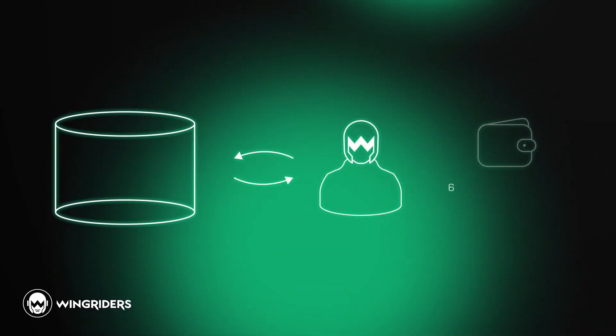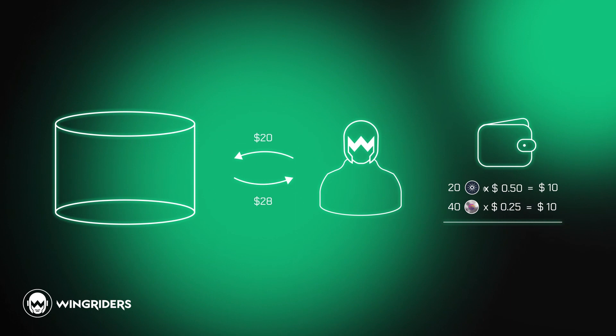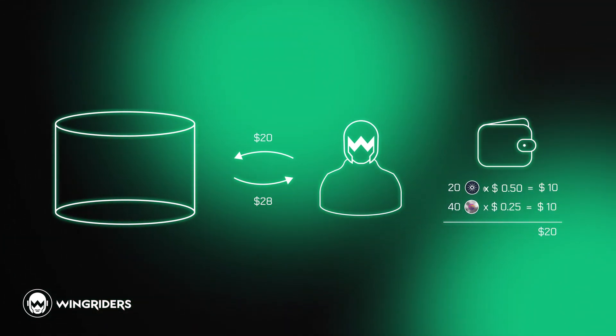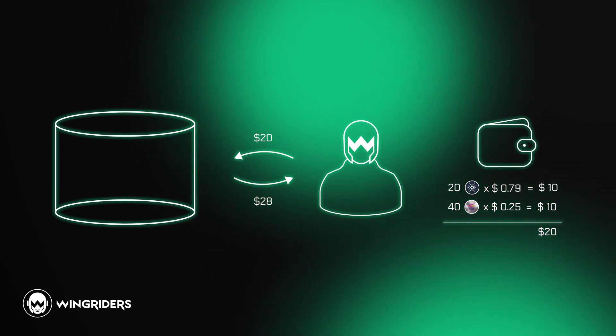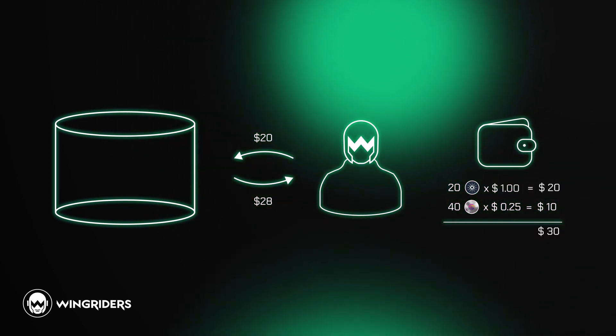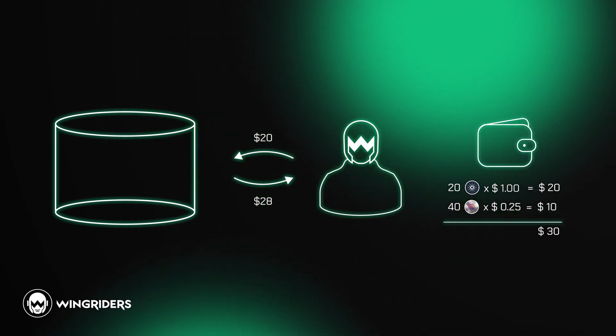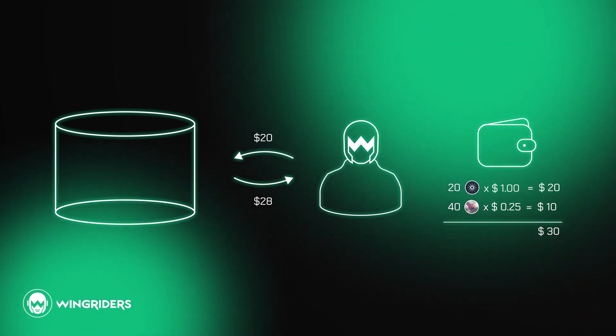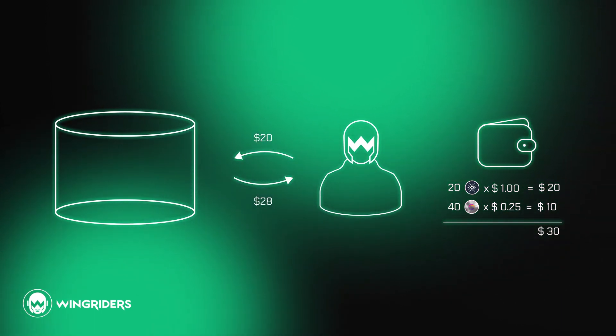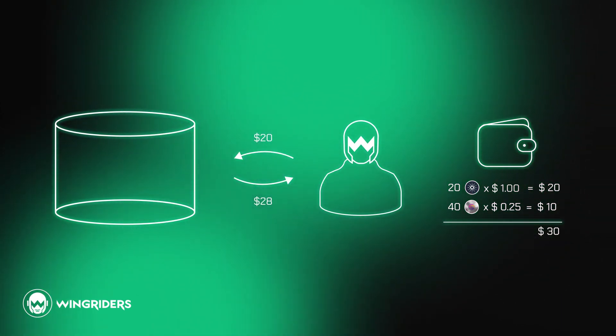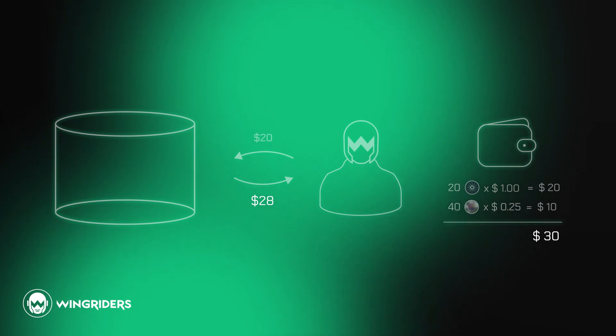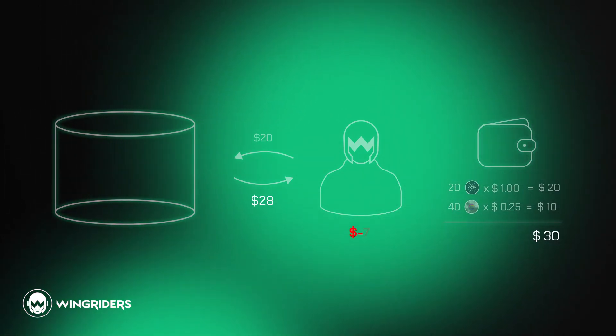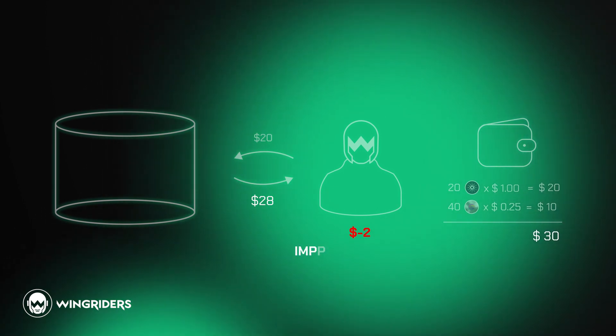If you haven't deposited those 20 ADA and 40 WMT into the pool and just kept them in your wallet, thanks to the price rise of ADA, your 20 ADA in the wallet would now have $20 value, plus your 40 WMT would still have the value of $10. In total, you would now hold the value of $30 in your wallet. But since you deposited them in the pool and withdrew them, you hold $28. The $2 difference in this case is the impermanent loss.